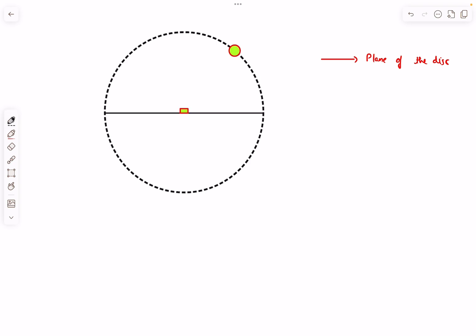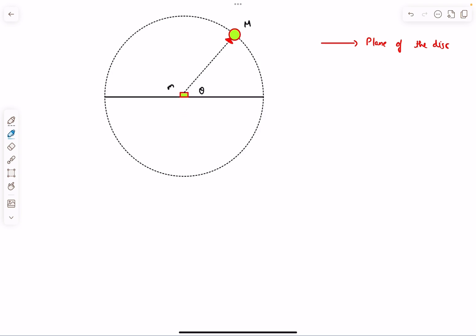First, this is the plane of the disk. The cube is placed somewhere here such that it is very close to the center. We have a particle orbiting our disk, and its position at this particular instant makes an angle theta with the plane of the disk.